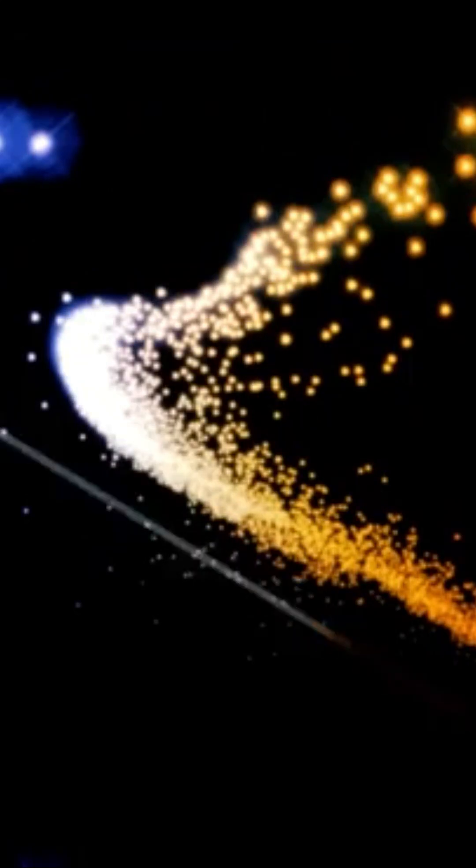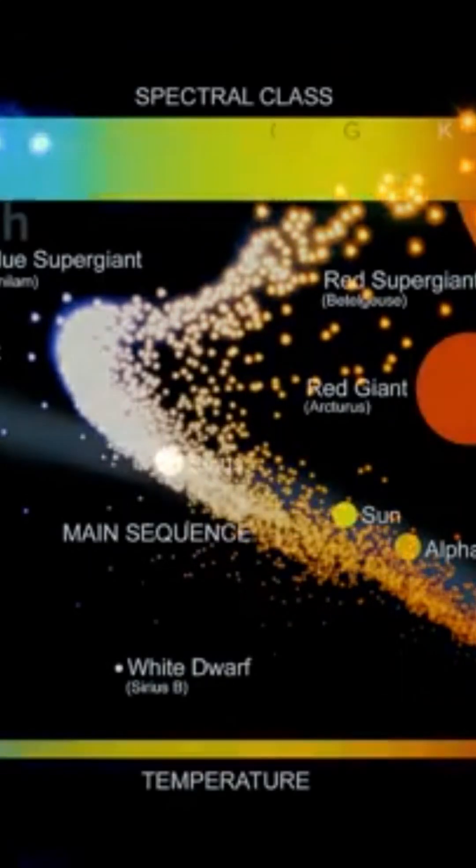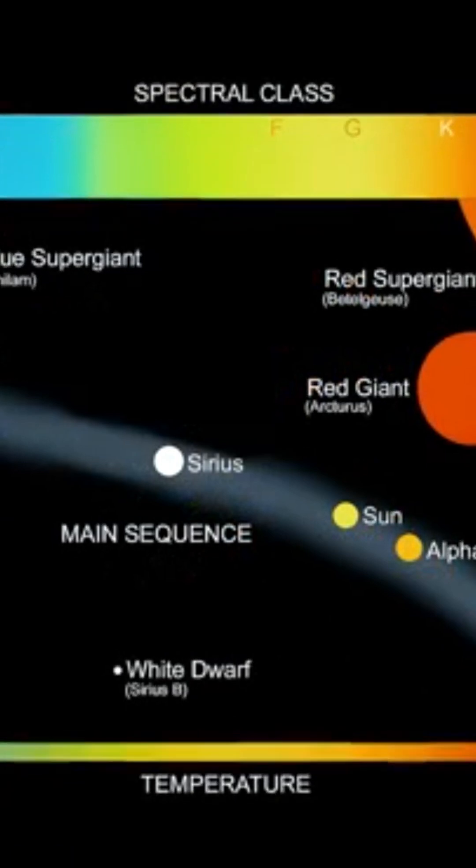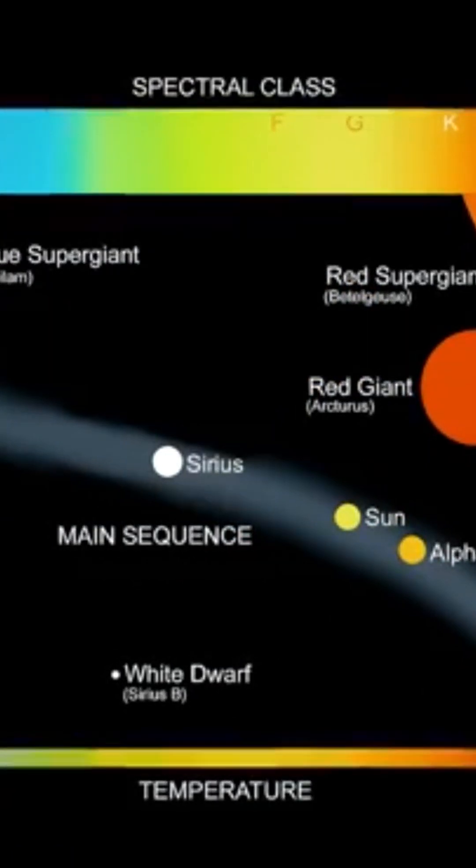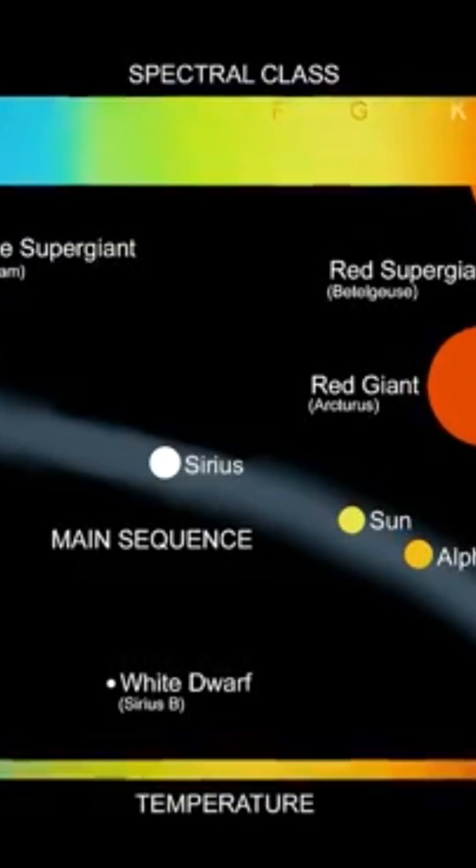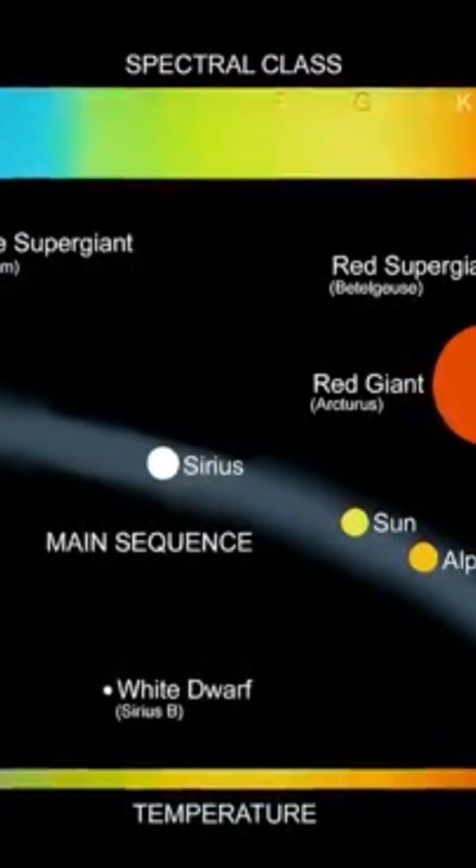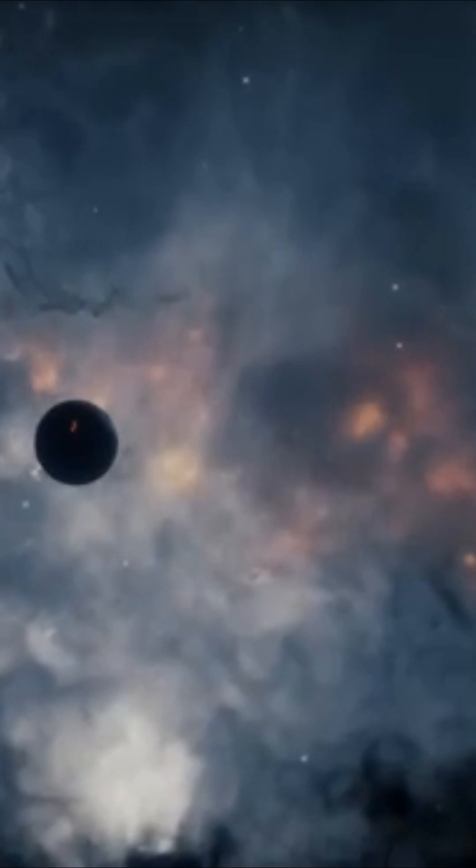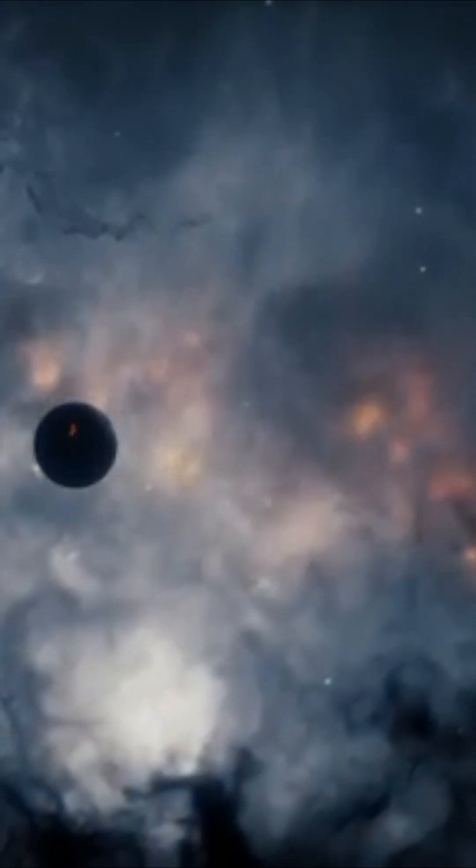Thus, our sun is cataloged as a yellow dwarf, while less massive stars are classified as orange or even red dwarfs. But the term black dwarf was replaced in 1975 by the American astronomer Jill Tartar, becoming brown dwarf.